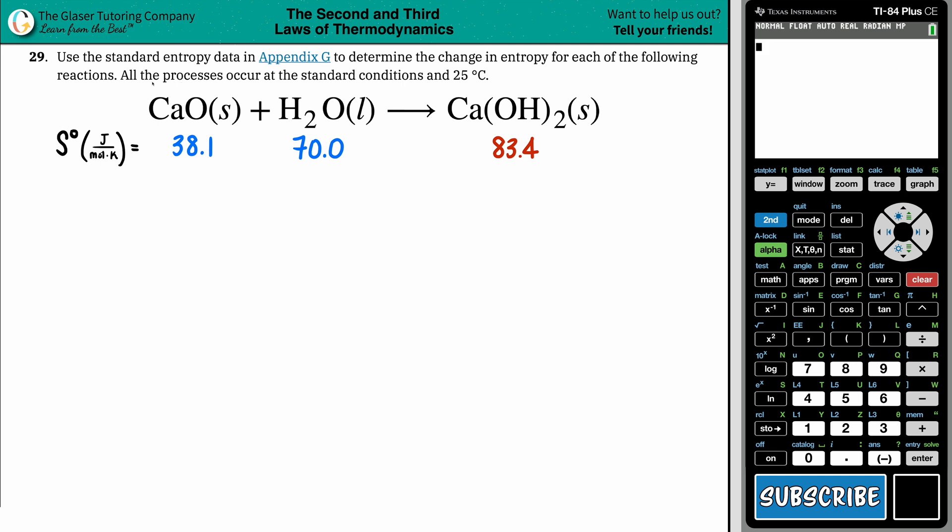Number 29. Use the standard entropy data in Appendix G to determine the change in entropy for each of the following reactions. All the processes occur at the standard conditions and at 25 degrees Celsius.